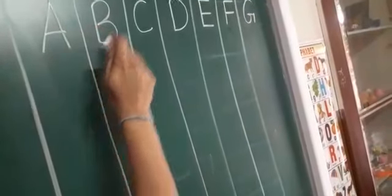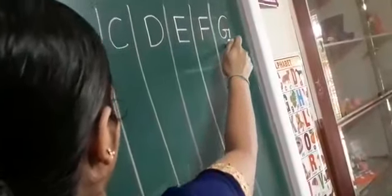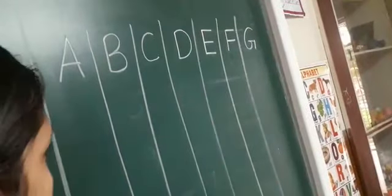Okay. A, B, C, D, E, F, G. Whole page you have to write children. Okay? Okay?